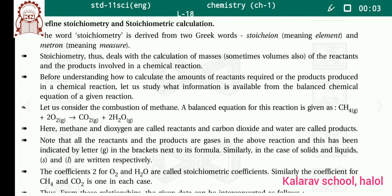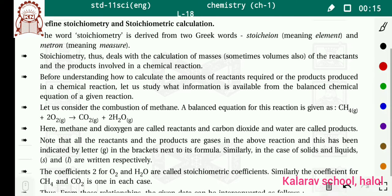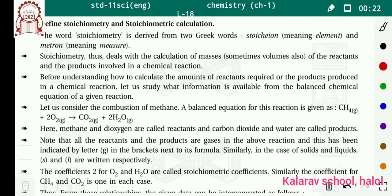Hello students, today we will continue with our chapter number 1. Today we will study stoichiometry and stoichiometry calculations. The word stoichiometry is derived from two Greek words — stoicheion and metron — where stoicheion means element and metron means measure, meaning element measurement.